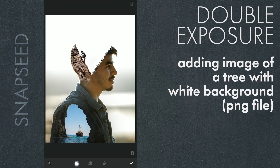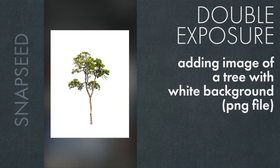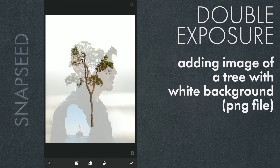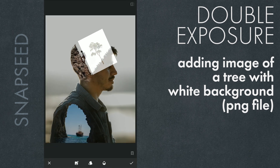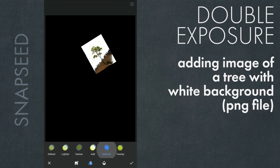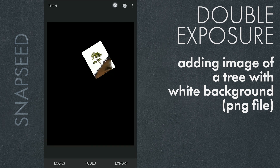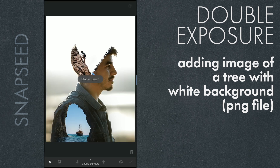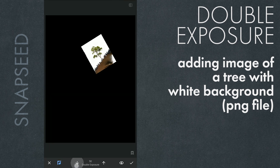Next, adding this image of a tree with a white background — this is a PNG file. Placing it like this. We'll use the Darken mode here, which gives this result. You can also go to the masking screen and remove the black parts by brushing them out.